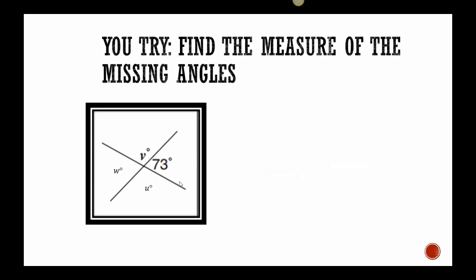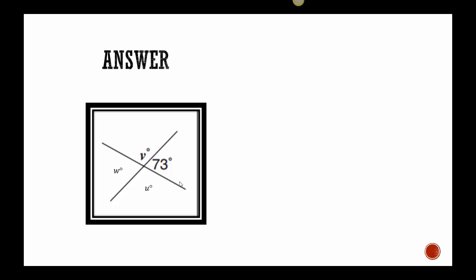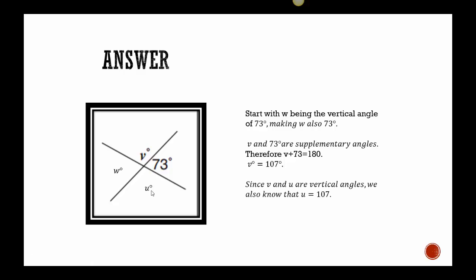I want you to try. So just like before, pause the video, write this one down. See if you can get the values of U, V, and W. Alright, so let's see how you did. Hopefully you started with W is vertical to 73, so it's equal. So W is 73. Then, I use that V and 73 are supplementary, so they add up to 180. So you can see my equation, V plus 73 is 180. So I just did a little subtraction, 180 minus 73, to get V is 107. Now I know that V is 107. I also know that U, being vertical, is also 107, so I know all three angles.